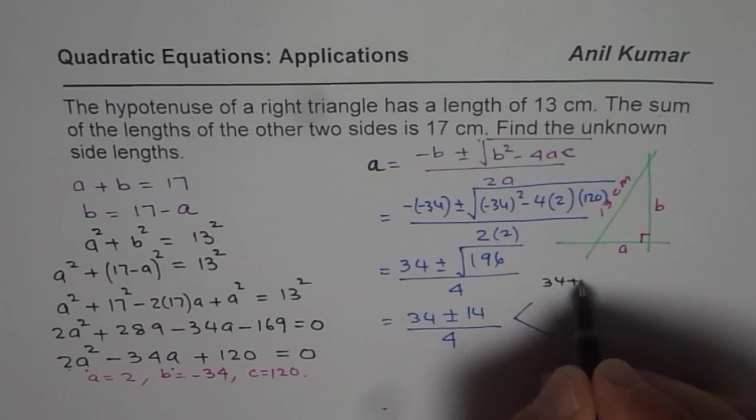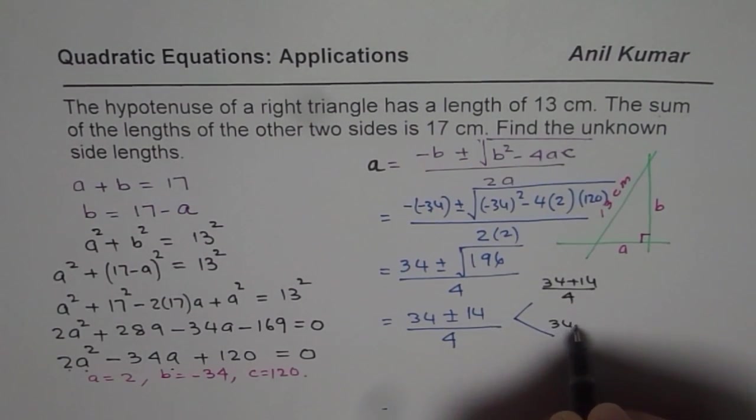Let me write here. 34 plus 14 divided by 4. The other one is 34 minus 14 divided by 4.